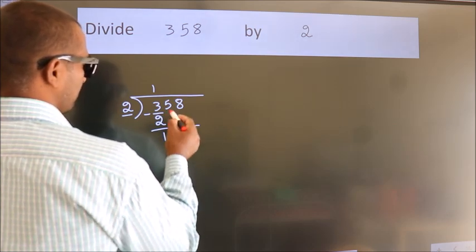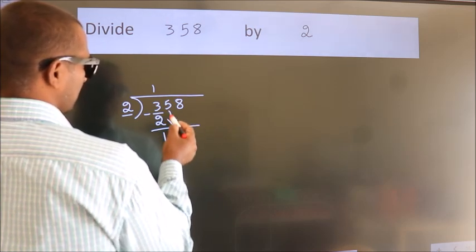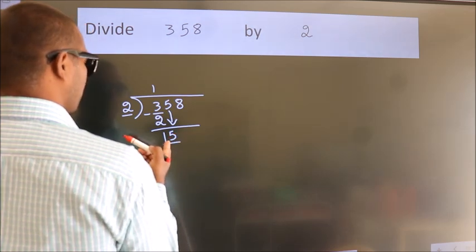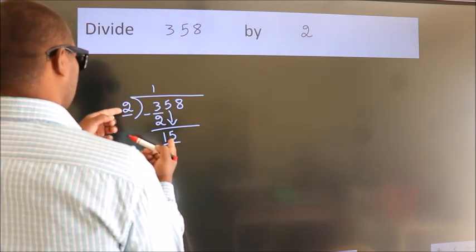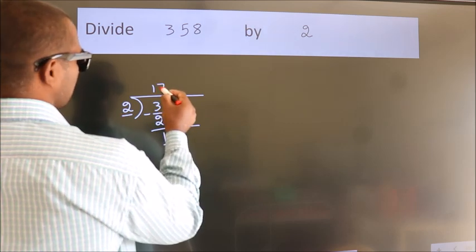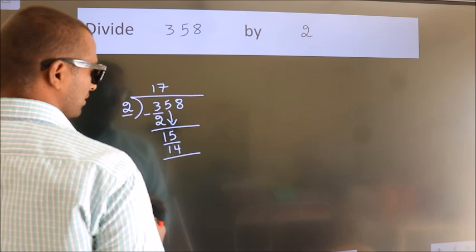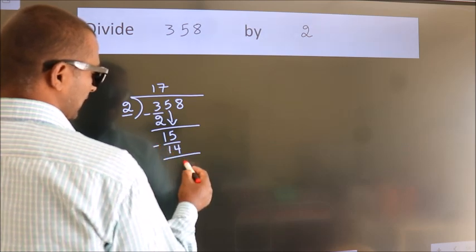After this, bring down the beside number. So, 5 down. So, 15. A number close to 15 in 2 table is 2 7s 14. Now, we subtract. We get 1.